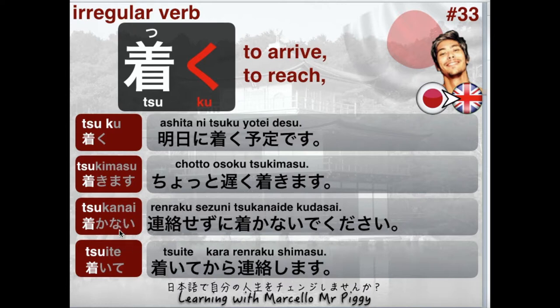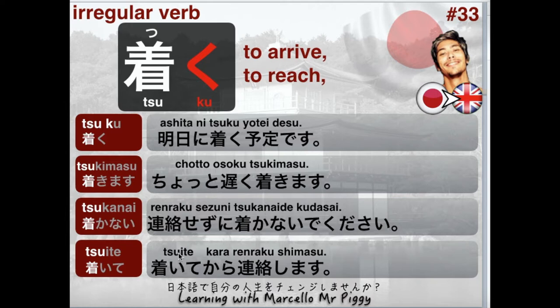Next one is the negative form: tsukanai. For example: rinraku sezu ni tsukanai de kudasai — please don't arrive without letting me know. Sezu ni means without, and rinraku means to inform. So make sure you tell me what time you will be arriving. Rinraku kudasai is something you're gonna be hearing a lot — it means give me news, like let's keep in touch when you say goodbye to someone.